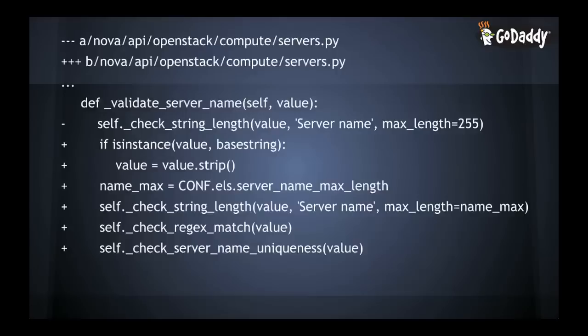This is a quick snippet of the patch we added to do all these extra checks. The validate_server_name function was already there — we just had to add a few extra checks. We made the max length configurable because it was hard-coded to 255. We have the regex check there, and the check_server_name_uniqueness function calls out to Active Directory to see if the name already exists.